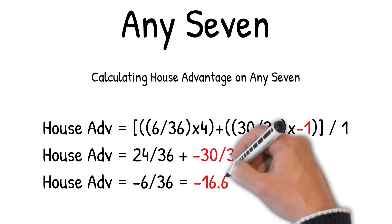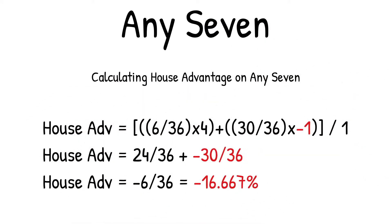Calculating house advantage on Any Seven: house advantage equals six out of 36 times a four dollar win, plus 30 out of 36 times minus one per loss. Add those together divided by a one dollar bet: 24 out of 36 plus minus 30 out of 36 equals minus 6 over 36, equals minus 16.667%.